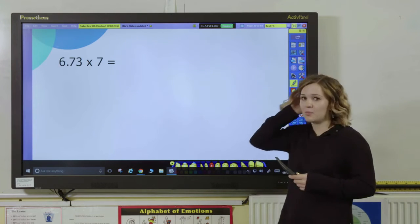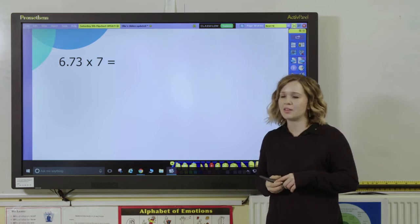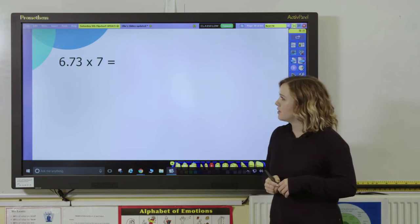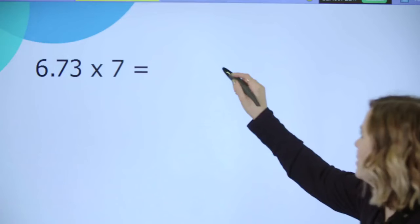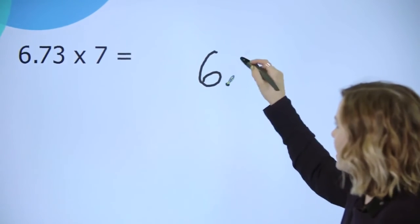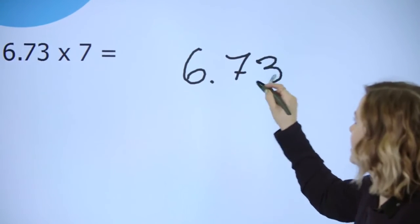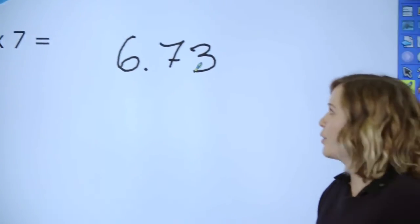Now let's move on to an example where you might not be best off using an informal method. So 6.73 multiplied by seven. With this we're going to go for the written method. You really want to make sure your pupils have a very solid understanding of the place value of decimal numbers for these kind of questions.